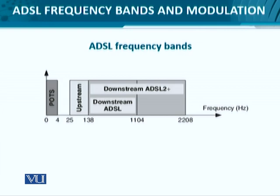Looking at the overall spectrum: we have the telephone or PSTN frequency band limited to 4 kHz, then a broad guard band of around 21 kHz to ensure no interference between ADSL frequencies and voice signals. After that, from 25 to 138 kHz we have upstream, and from 138 to 1104 kHz we have downstream.